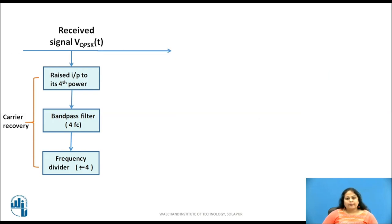The incoming QPSK signal is first applied to a carrier recovery circuit which uses a squaring circuit to recover the carrier. The received QPSK signal is raised to its fourth power to generate a sinusoidal component cos raised to 4, 2 pi fct. This signal is then passed through a band pass filter to pass only a sinusoidal signal of frequency 4 fc and suppress all other frequency components.